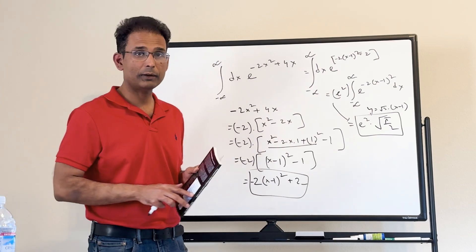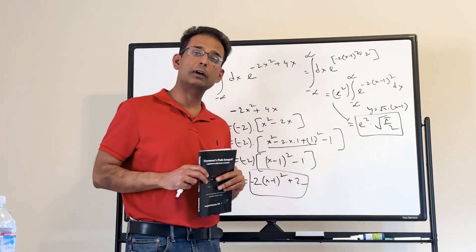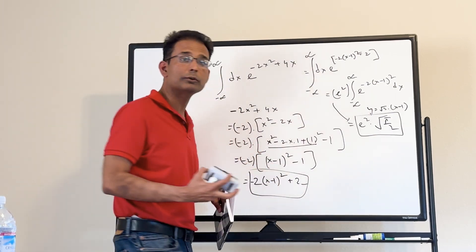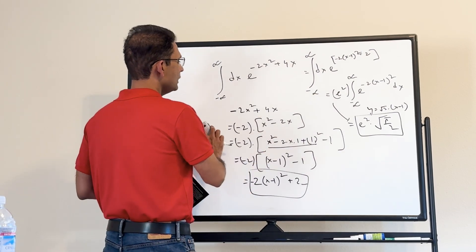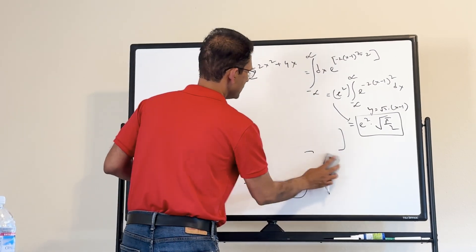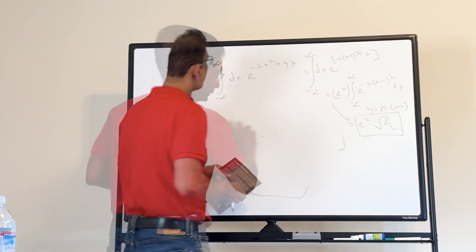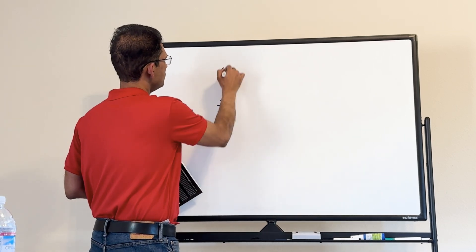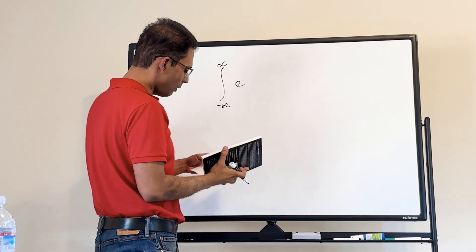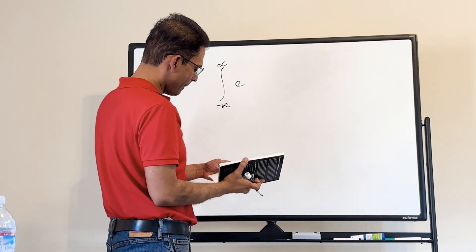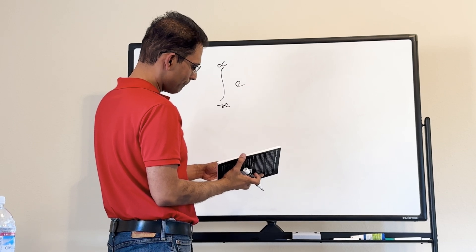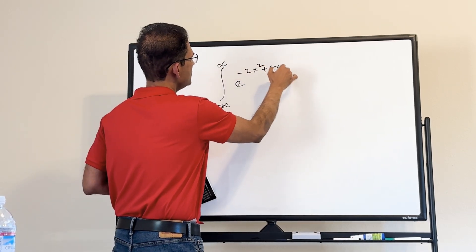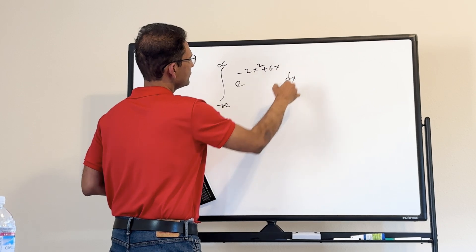This is not a coincidence — it's a property of Gaussian functions. To illustrate, consider a different integral: minus infinity to plus infinity of e to the power minus 2x squared plus 6x dx. The result will be some constant times e to the power of something, and we can find that 'something' without fully doing the integral.